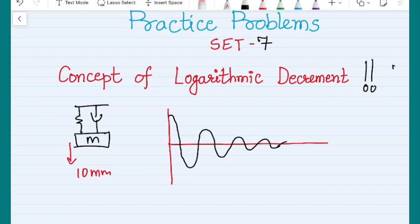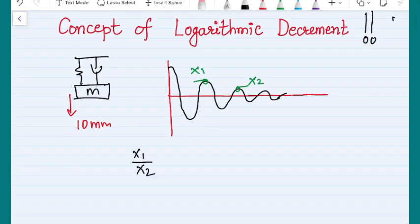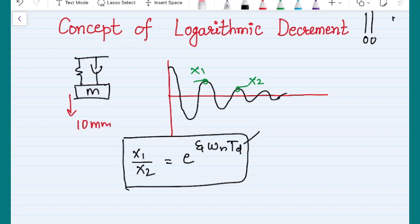If you take the ratio of two consecutive peaks — this is x1 and this is x2 — your first formula is x1 divided by x2. Please remember the larger number comes in the numerator and the smaller number in the denominator. So x1 by x2 equals e to the power ζ·ω·td, where td is the damped time period. You will be given the natural frequency, x1, and x2, and you are supposed to find the zeta value.